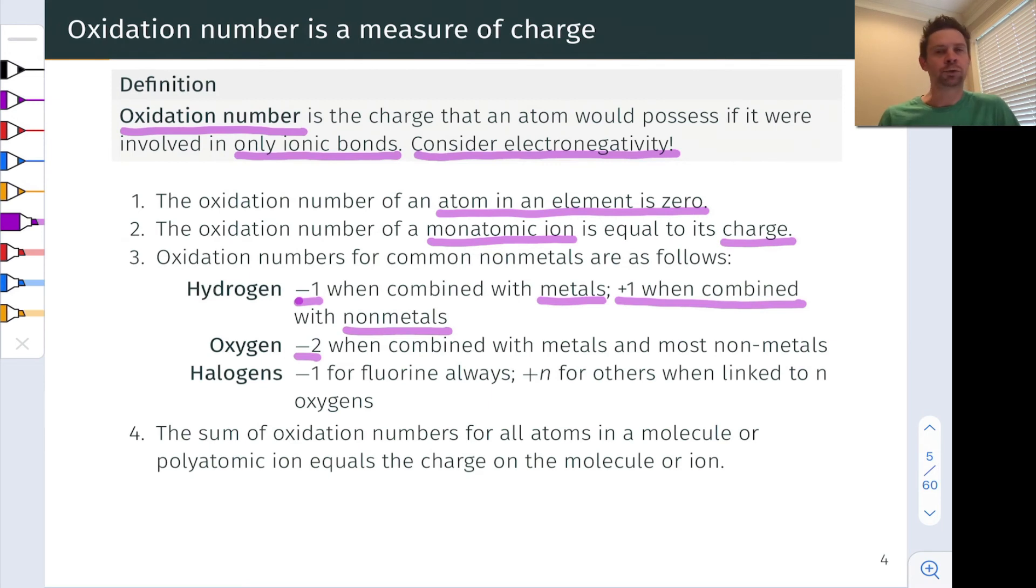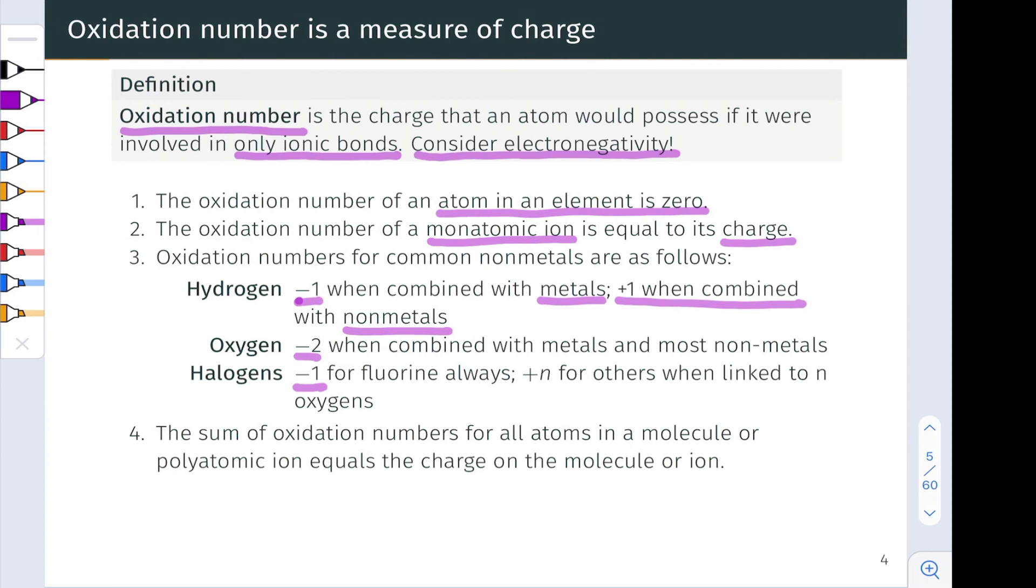The halogens, well, if we're talking about fluorine, which is the most electronegative element on the periodic table, fluorine always is in the oxidation state of negative one for our purposes. And for the other halogens, these are negative one when they're linked to less electronegative atoms via single bonds, for instance. But when they show up in polyatomic anions, polyatomic oxyanions like perchlorate, hypochlorite, etc., they're going to have a positive oxidation number since they're linked to oxygen, which is more electronegative than those halogens below fluorine.